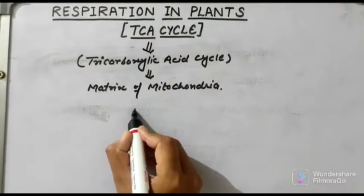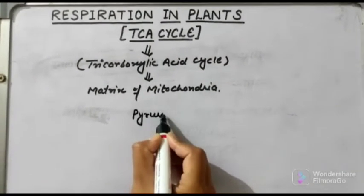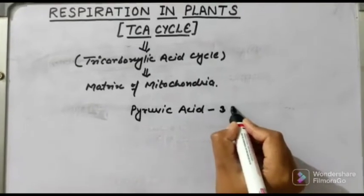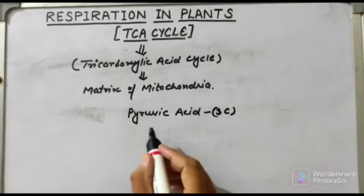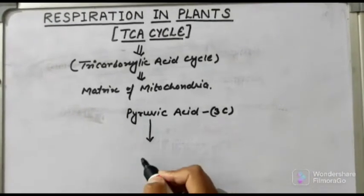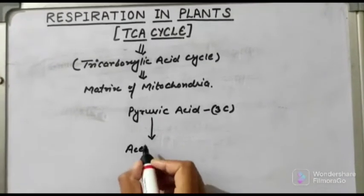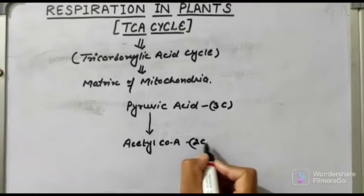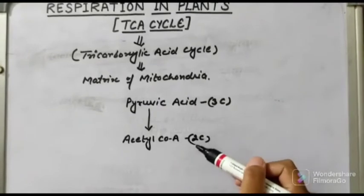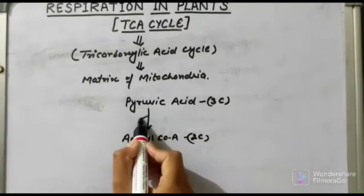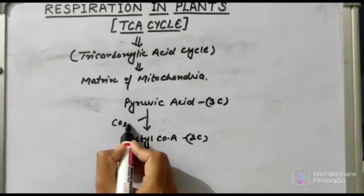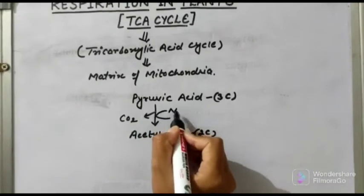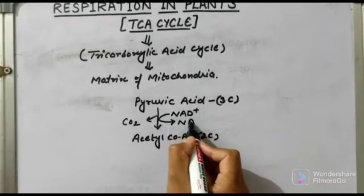We will continue our cycle from pyruvic acid. Pyruvic acid is generally a three-carbon compound — we will mention the number of carbons in brackets. This pyruvic acid will convert into acetyl coenzyme A, which is a two-carbon compound. Since a three-carbon compound is converted into a two-carbon compound, there will be a loss of one carbon in the form of carbon dioxide. There is also a reduction of NAD⁺ into NADH₂.